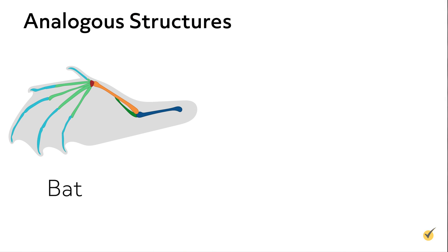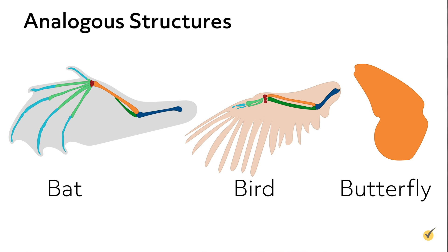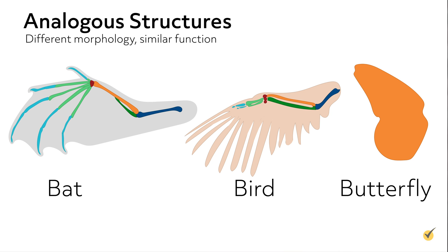Let's take our bat wing again and this time compare it to a butterfly wing and a bird wing. The bone structure of the bat wing is closer to the bone structure of a human arm than it is to a bird wing. Bird wings have a single humerus that branches into a radius and ulna, but birds don't really have a wrist complex or distinct metacarpals or phalanges. Butterfly wings don't have any bones at all. Clearly these structures are anatomically different, but interestingly enough, they all allow for flight — they all have different morphology but have similar function.